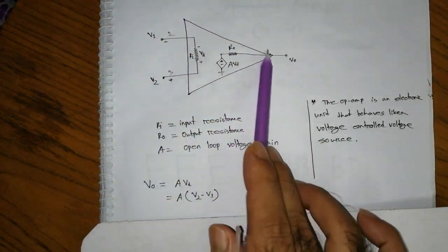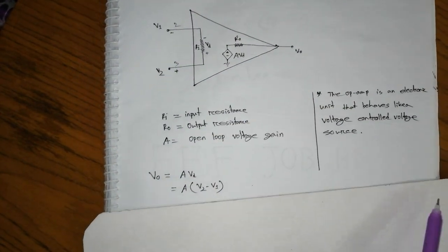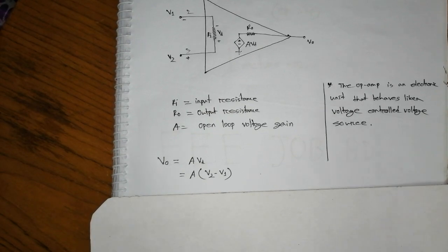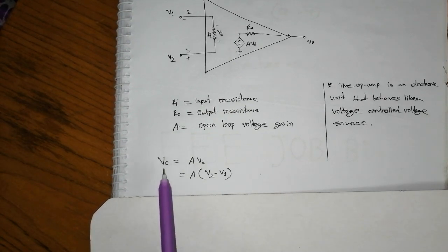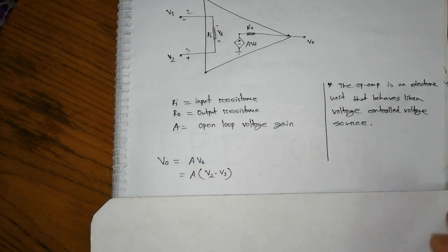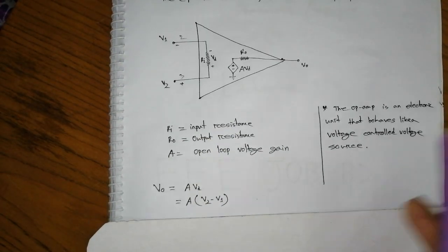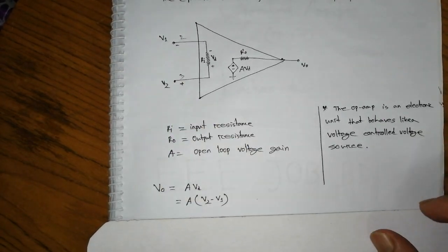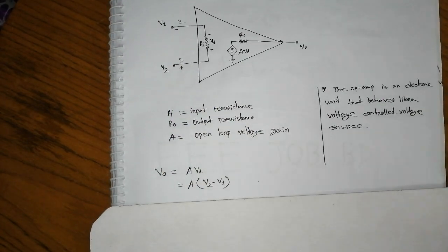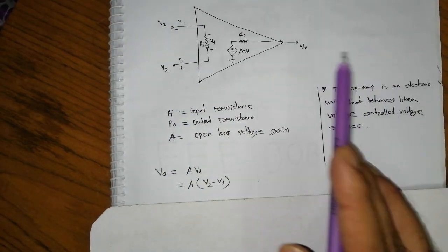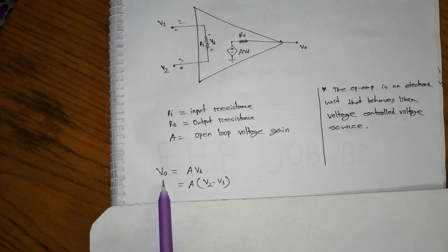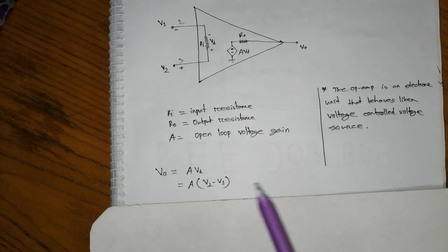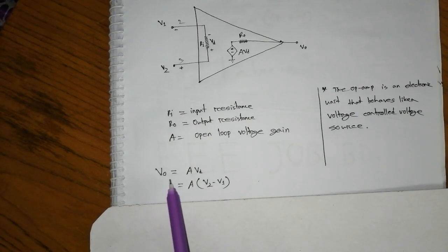The output with no feedback is the differential operation. The difference is V2 minus V1. The output equation is V0 equals A times VD, where VD is the differential voltage.